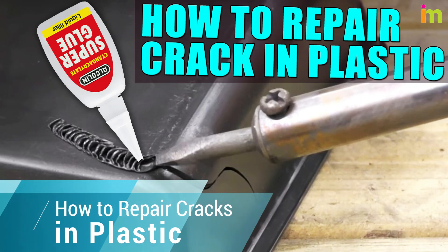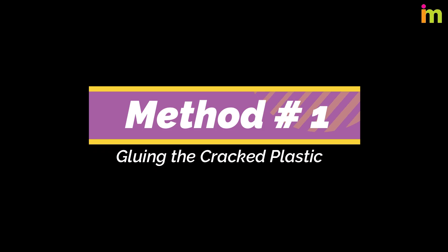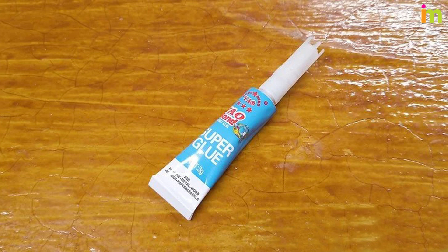How to Repair Cracks in Plastic. Method Number 1: Gluing the Cracked Plastic. If you need to reconnect a crack in plastic, you can use plastic glue, which is specially formulated to bond plastic surfaces.